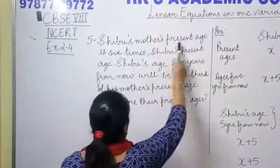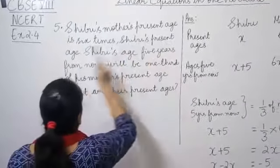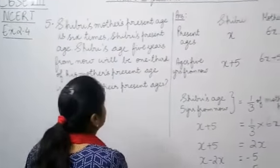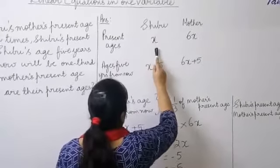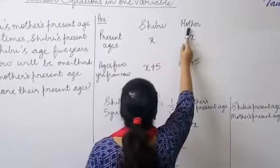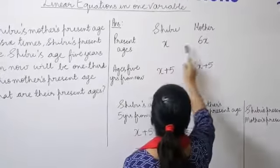Shibu's mother's present age is 6 times Shibu's present age. So, if Shibu's present age is X, then his mother's present age will be 6 times Shibu's age, which will be 6X.